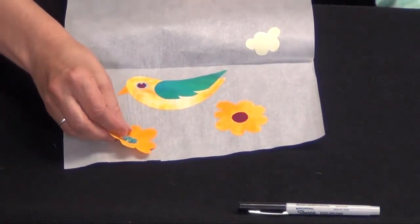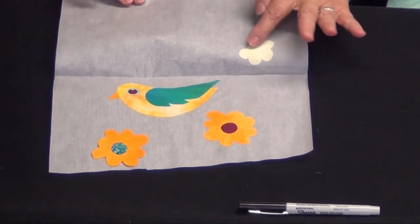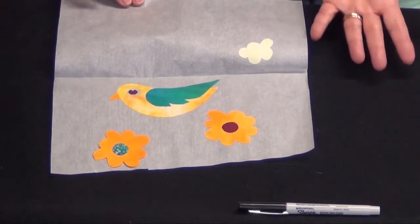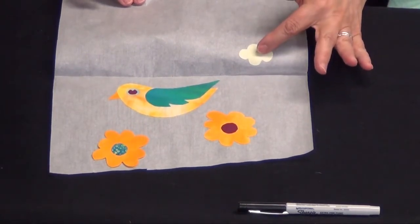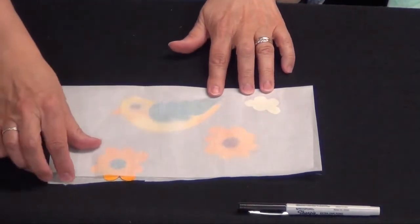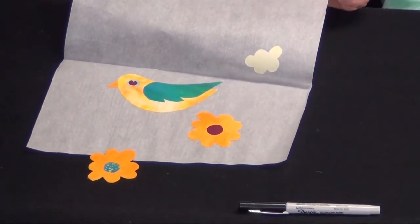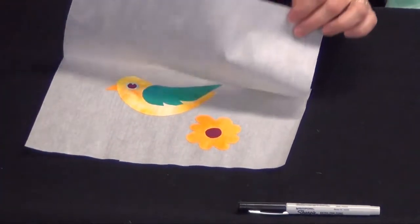Another use for release paper that I've discovered is a lot of times you'll have fabrics that are really light in value and you can't tell which side the glue is on. So I'll put that little piece of fabric between two pieces of release paper, iron it and the side it sticks to, Freda, is the glue side. Very important tip so that it doesn't end up on the back of your iron.